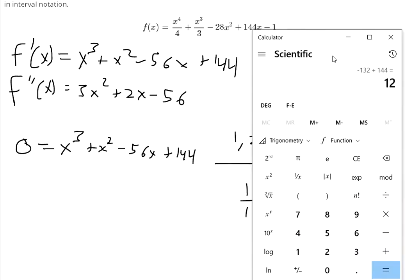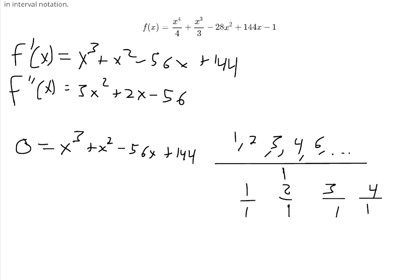If you plug in 4 into this, you get 4³ + 4², so we get 80 for the first two terms. Negative 56 times 4, plus that 80, oh, we got our first root. We just found out that x equals 4 is a root.